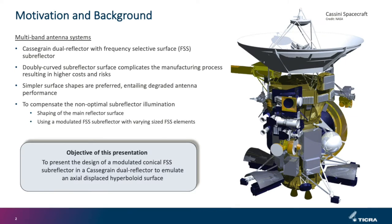The objective of this presentation is to present the design of a modulated conical FSS subreflector in a Cassegrain dual reflector to emulate an axially displaced hyperboloid surface.